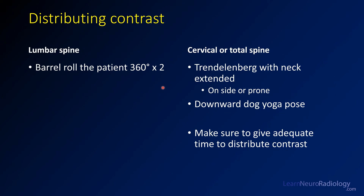When distributing contrast, if you're doing just a CT myelogram of the lumbar spine, you can usually just roll the patient a couple of times and that's sufficient. If you're doing cervical or total spine, I tend to put the patient in Trendelenburg with their neck extended — they can be on their side or prone. On their side works quite well because it eliminates some of the spinal curvature and you don't have to Trendelenburg them as much. If you don't have a table that tilts, you can have the patient get on their knees in a downward-dog yoga pose with the lumbar spine up and the neck lower — that's actually a really effective way to distribute the contrast.